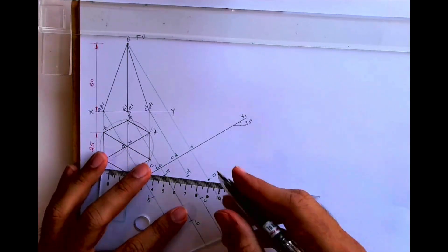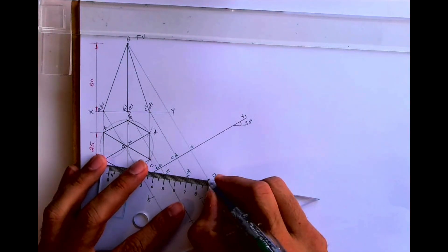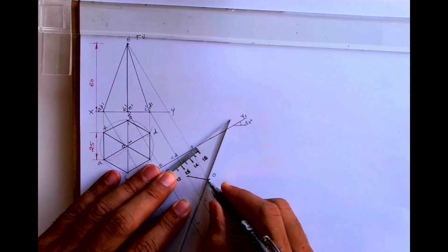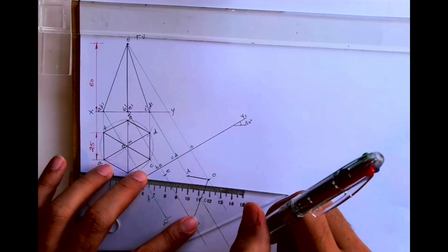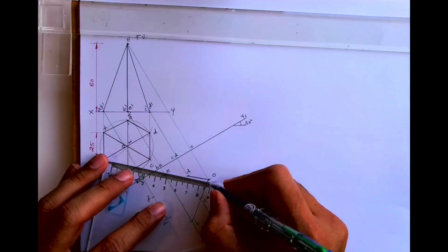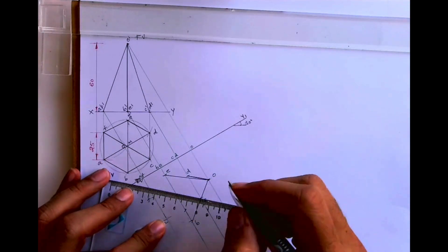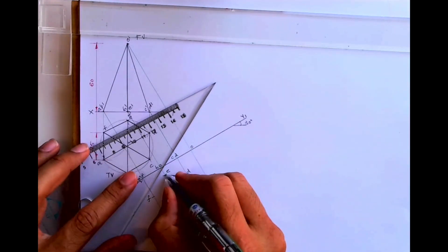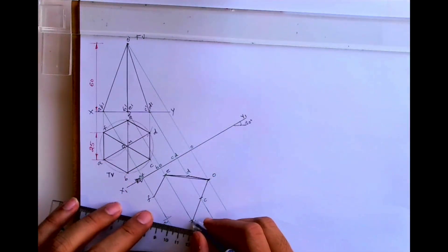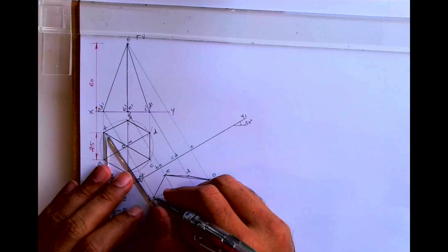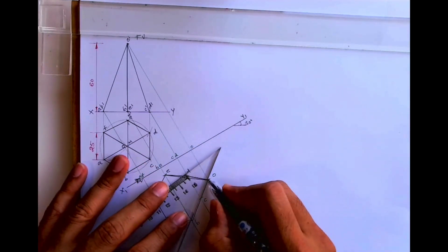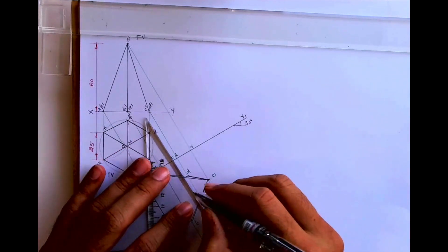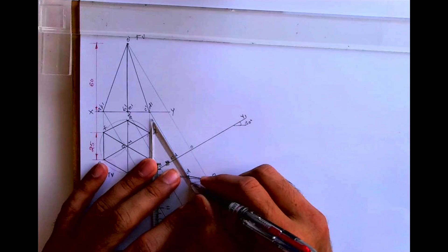Now we join the extreme boundary. When you see from here, OE will be visible to you, so OE is drawn dark. This is the extreme boundary I am drawing. Then OB will also be dark. C to D will be dotted because it is away from you.